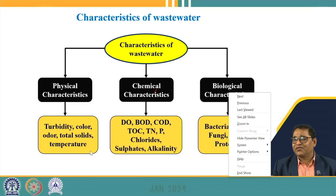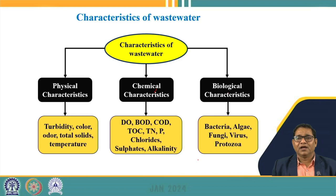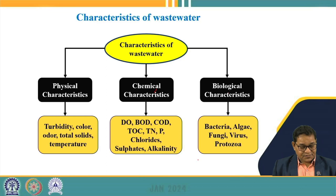Chemical parameters include total nitrogen, phosphorus, chloride, sulfate, alkalinity, and various other chemicals present in wastewater. Biological characteristics include various types of bacteria, algae, fungi, viruses, and protozoa. There is a detailed procedure for identification and analysis of these biological organisms, and this type of impurity comes under biological characteristics.